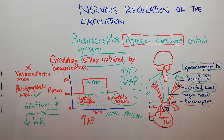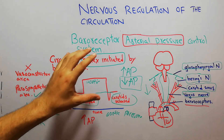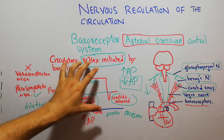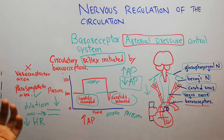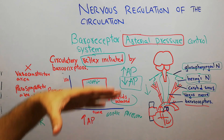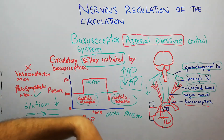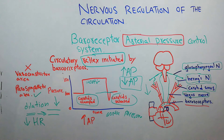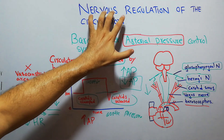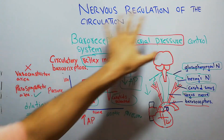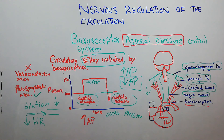That's all about the circulatory reflexes initiated by baroreceptors — when arterial pressure is decreasing and when it is increasing — and that shows the importance of the nervous system in the regulation of circulation. Thanks a lot for watching.